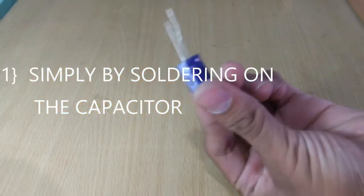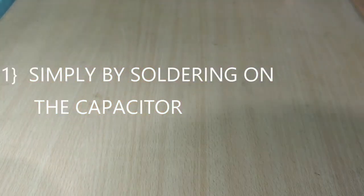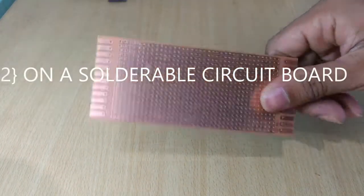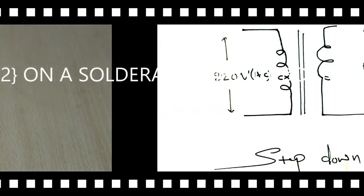At first we will do it simply by soldering on the capacitor, by forming a bridge-like structure it will be easy to understand. Second we will do the same on a breadboard, one of the easiest ways. And at last we will do the same on a solderable circuit board.